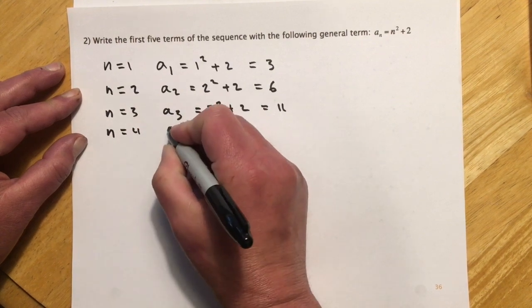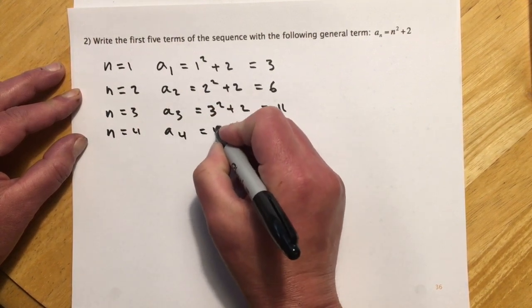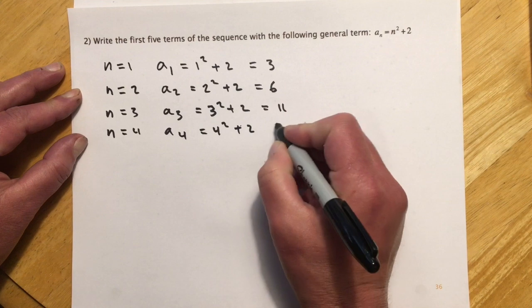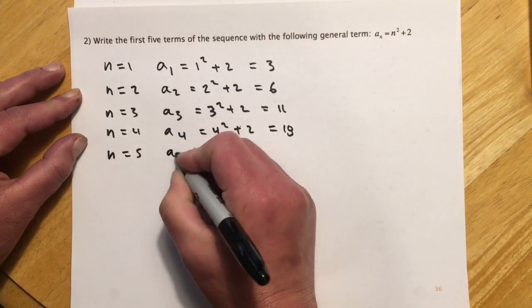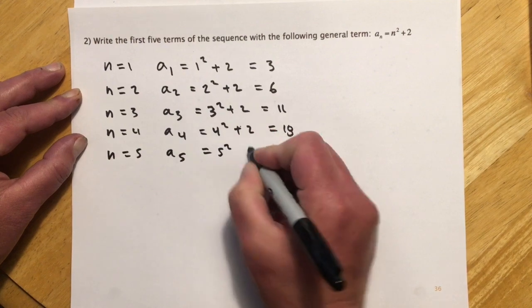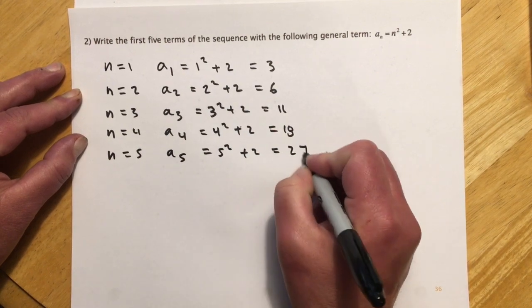And then for 4, you can see that it gets really repetitive. 4 squared plus 2, so that would be 18. n equals 5. So a sub 5 is 5 squared plus 2, or 27.